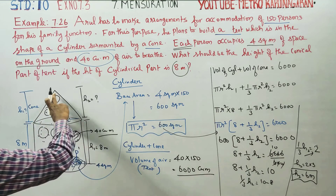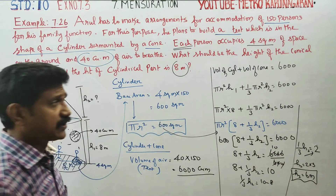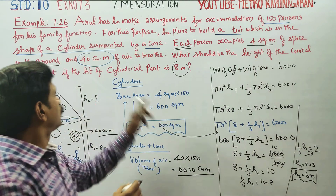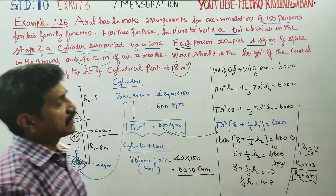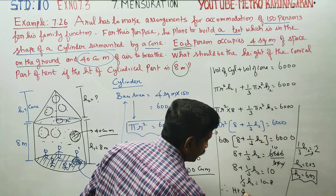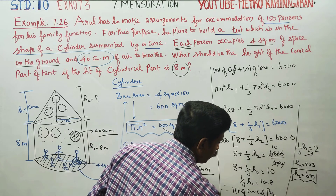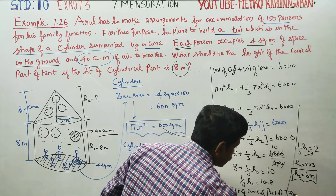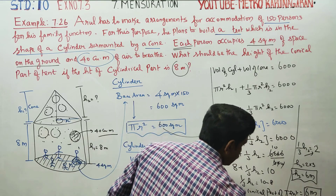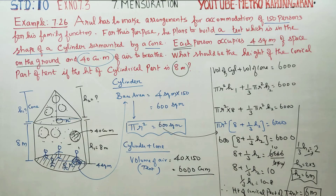h2 equals 6 meters. Therefore, the height of the conical part of the tent is equal to 6 meters. That is your final answer for this problem. Thank you.